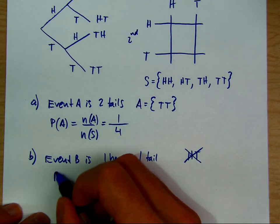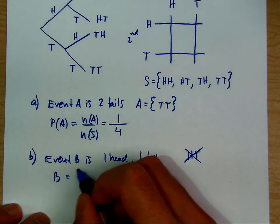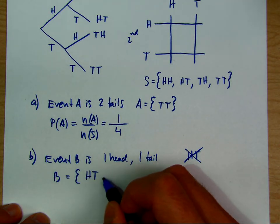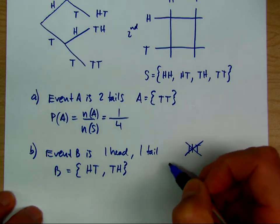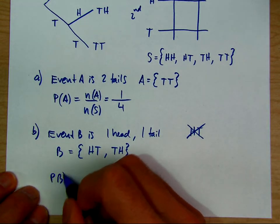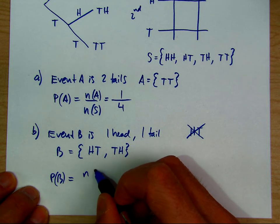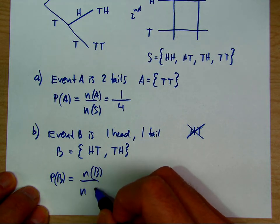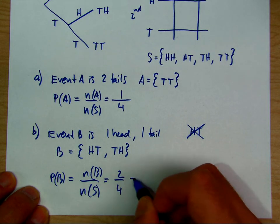Event B can be heads-tails or tails-heads. The probability of B is the number of elements in set B over the number of elements in set S, giving us two over four.